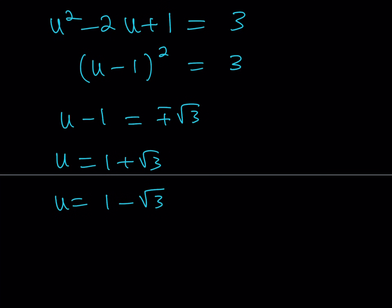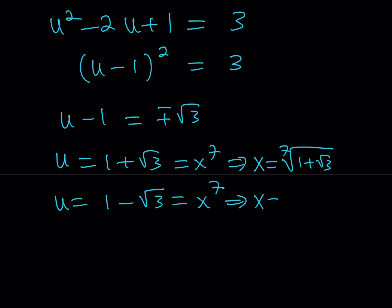Remember that u equals x to the 7th power, so we set each equal to x to the 7th and take the 7th root. That gives x equals the 7th root of (1 plus root 3), and x equals the 7th root of (1 minus root 3). Is the second one a real number? Since 1 minus root 3 is negative but we're taking the 7th root, the answer is negative and real. So we get two real solutions from here.